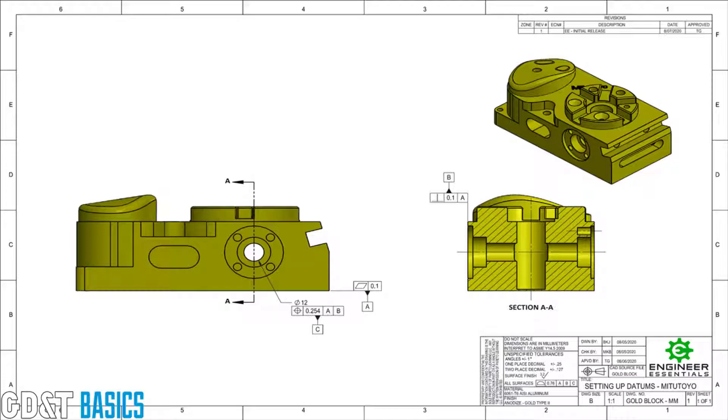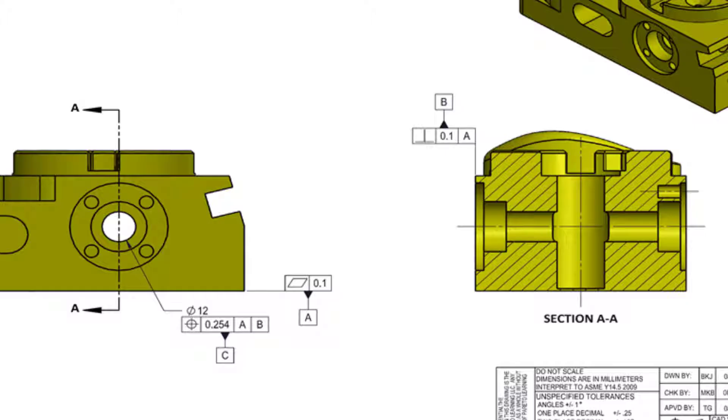This is a drawing of the gold block that Mitutoyo has designed for use as a training aid. At this point, we only have the datum features shown on the drawing, and we've done this so that our focus is on the datum features only. Let's zoom in here so that we can get a better look at these datum features along with their respective datum qualifiers.